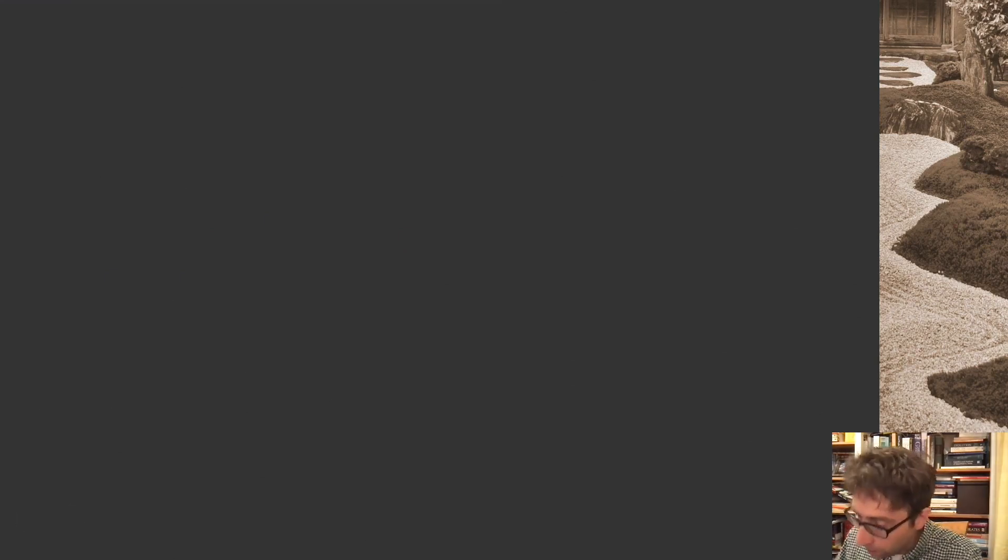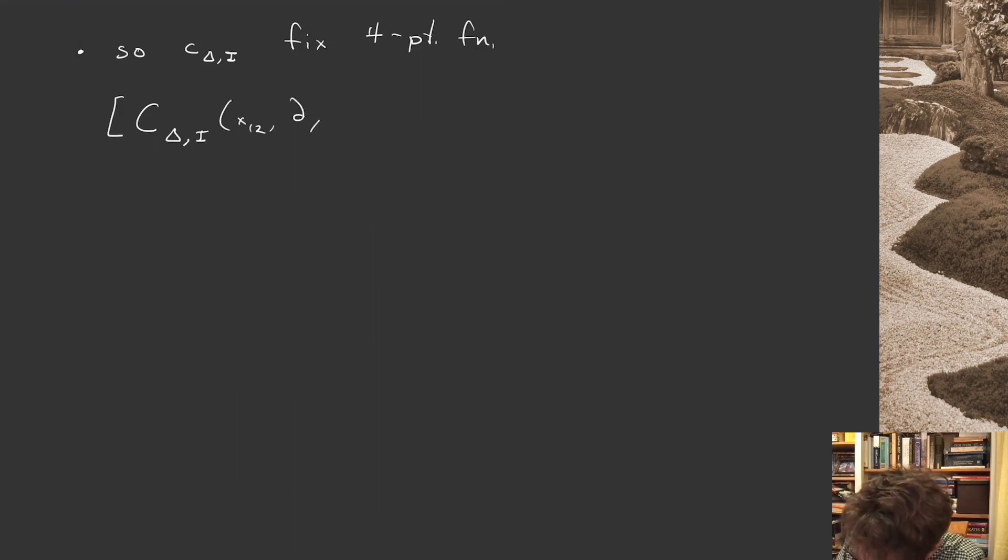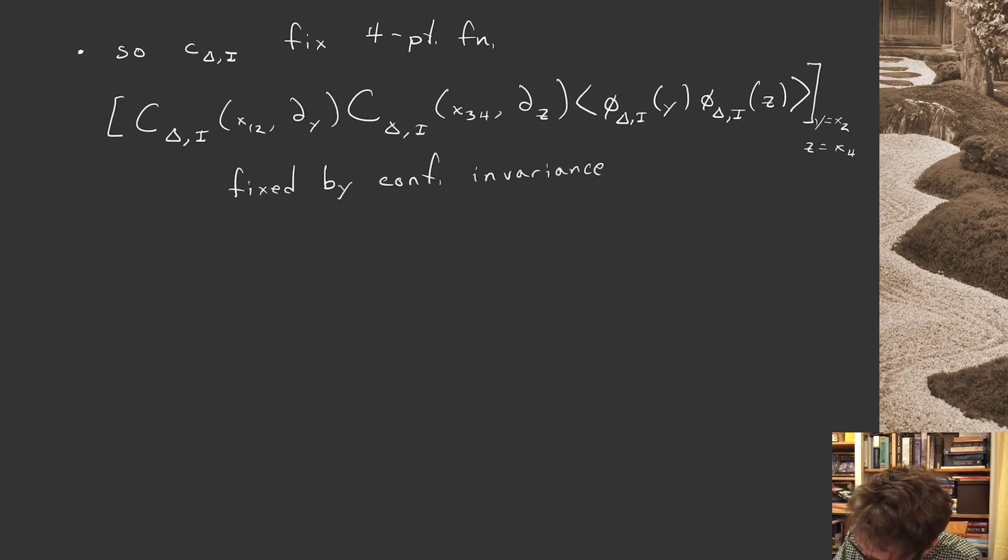That's a very important notion in conformal field theory. So these lowercase c delta i's, they fix the four-point function. The rest of it, this huge product of the capital C's, c delta i of x1,2 partial y, c delta i x3,4 partial z, acting on the two-point function phi delta i y, phi delta i z, and then we should evaluate these at y equals x2 and z equals x4. This is fixed by conformal invariance.